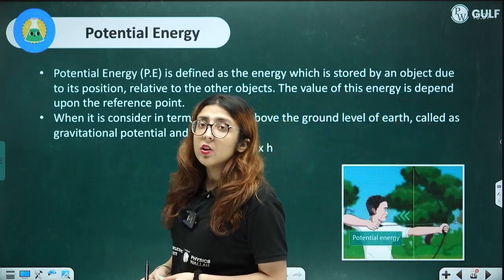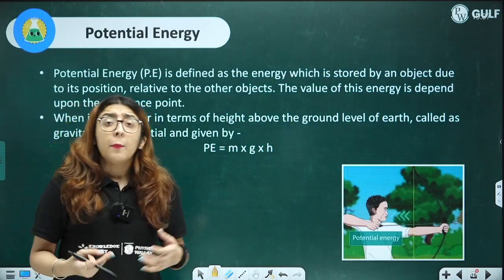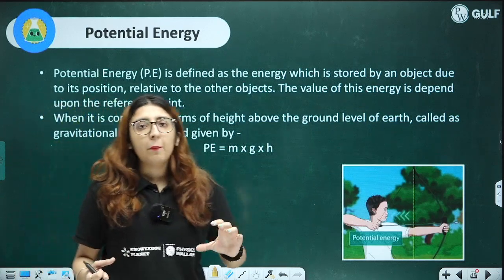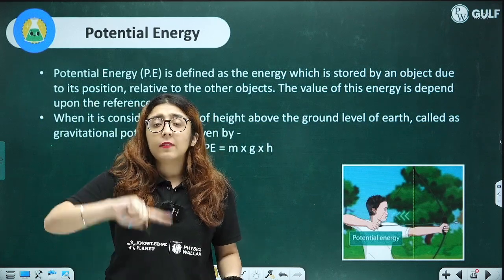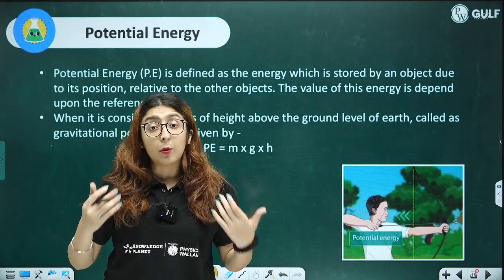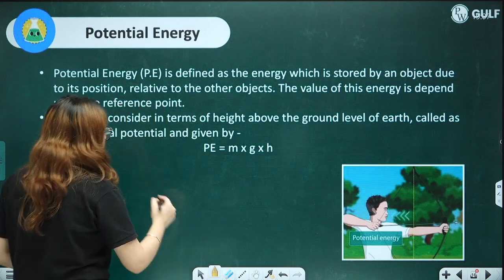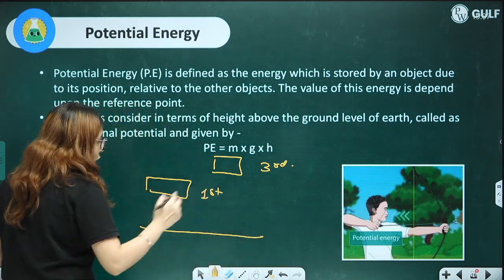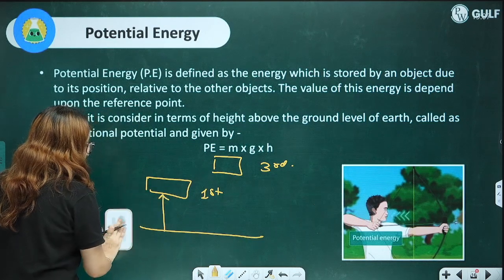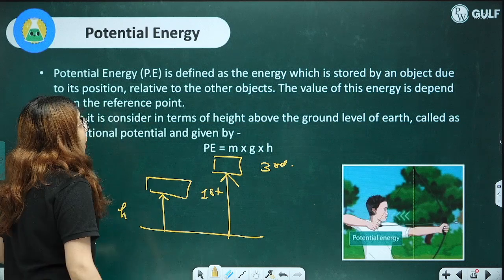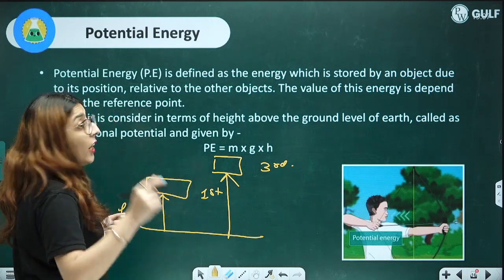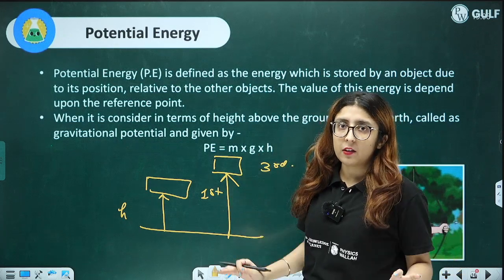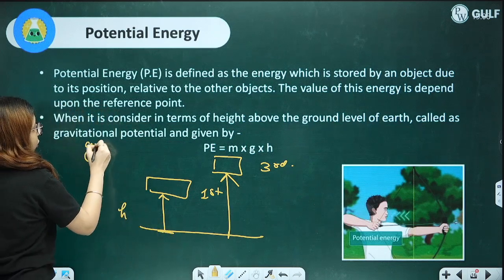We also have potential energy, which is concerned with the configuration or position of an object. A book kept at the third floor will have more potential energy than one at the first floor because of the height at which it is kept. Potential energy is the energy stored by an object due to its position. We take the ground as our reference point where height = 0.